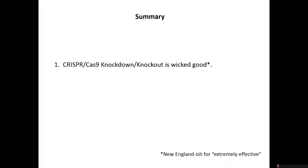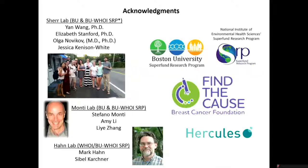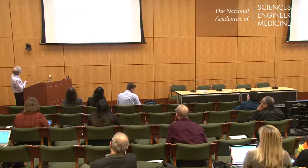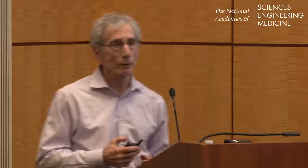The summary: CRISPR-Cas9 knockout is wicked good. Robust knockout results in robust biologic and molecular changes. Robust biologic and molecular changes increase confidence in additional therapeutic applications. And if you didn't get it the first time — knockdown is wicked good. Most importantly, I want to thank the people who actually did the work: Yan Wang, a great senior PhD in my laboratory; Olga Novakov, just about to get her MD-PhD; Liz Stanford, now an assistant professor at Northeastern; Stefano Monte for the computational work in the BU Woods Hole Superfund Research Program; and Mark Hahn, the real AHR guru in our Superfund group. Funded by NIH, Find the Cause Breast Cancer Foundation, and Hercules. Happy to answer questions now or later. Thank you.